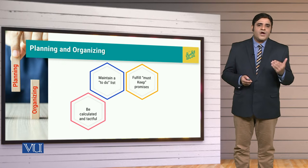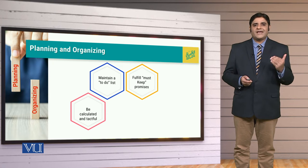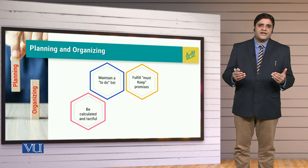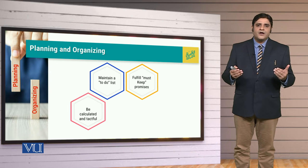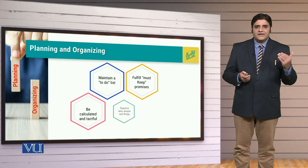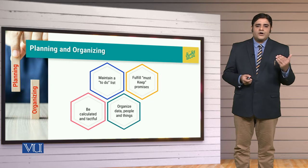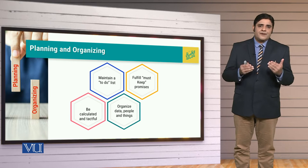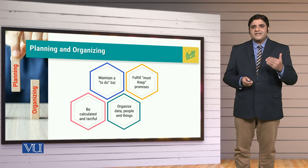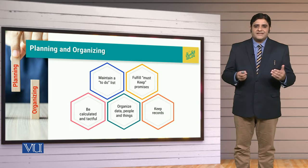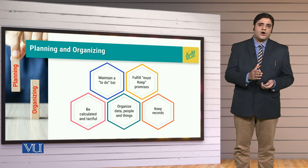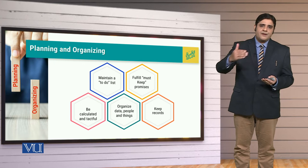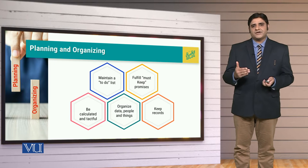The third thing is you have to be tactful and calculated. Because if you are not going with time calculations, 24 hours would be much less for you. You have to be organized related to data, people and things. And until you are organized, you will not be able to set priorities. At the same time, you have to keep records so that you can find out what progress, what goals you have already achieved.